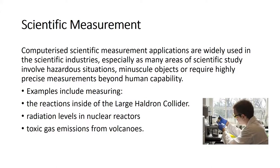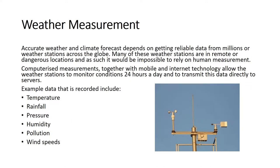Computerized scientific measurement applications are widely used in the scientific industries, especially as many areas of scientific study involve hazardous situations, minuscule objects, or require highly precise measurements beyond human capability. Examples include measuring the reactions inside the Large Hadron Collider, radiation levels in nuclear reactors, and toxic gas emissions from volcanoes. Accurate weather and climate forecasts depend on getting reliable data from millions of weather stations across the globe. Many of these weather stations are in remote or dangerous locations, and as such it would be impossible to rely on human measurement.